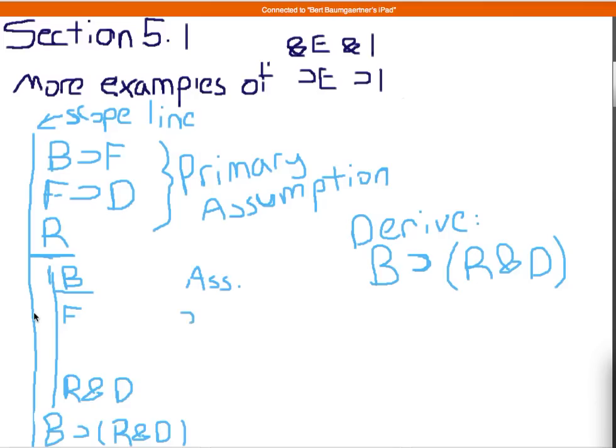We get that by conditional elimination using lines, and I should actually number these lines. So this is one, this is line two, this is line three, this is line four, and now we're on line five. So we did conditional elimination, we did that from rule one and from four.